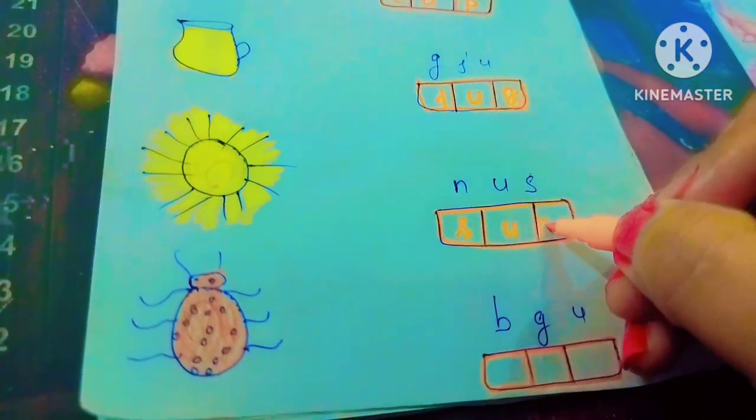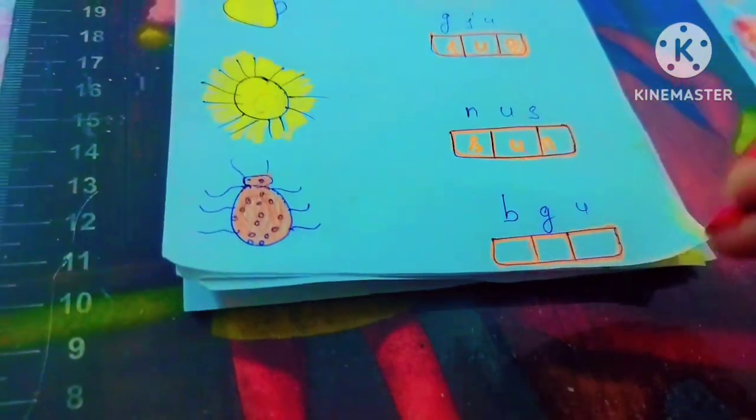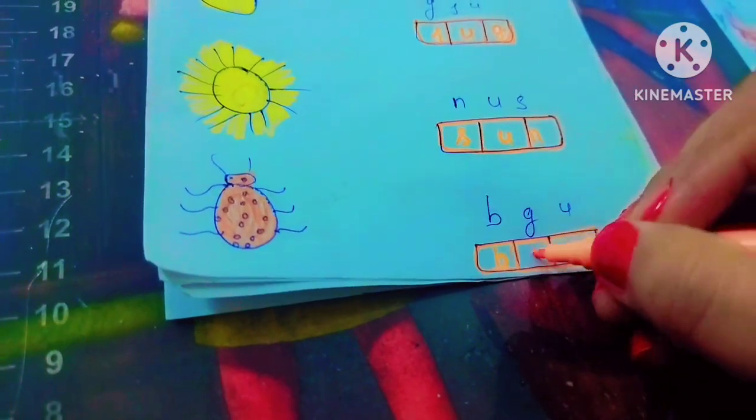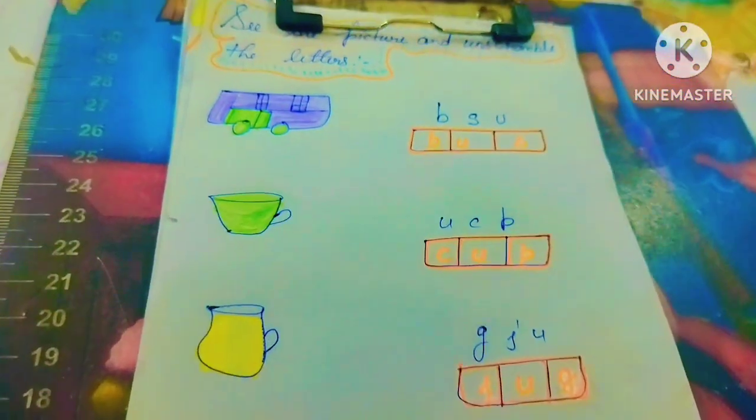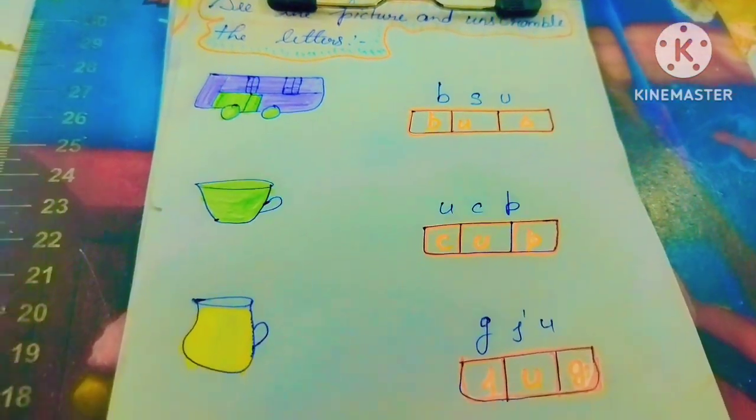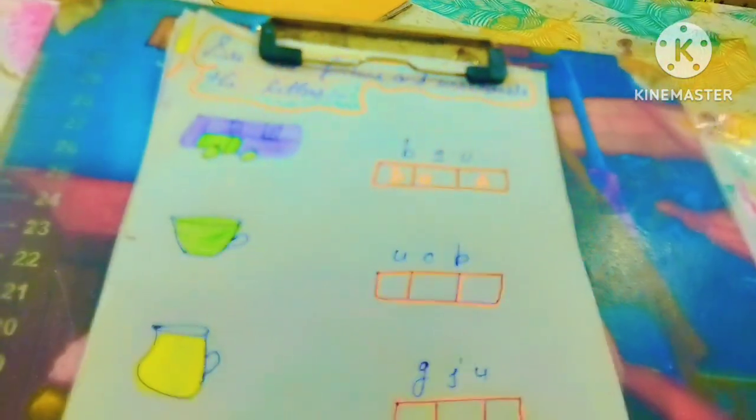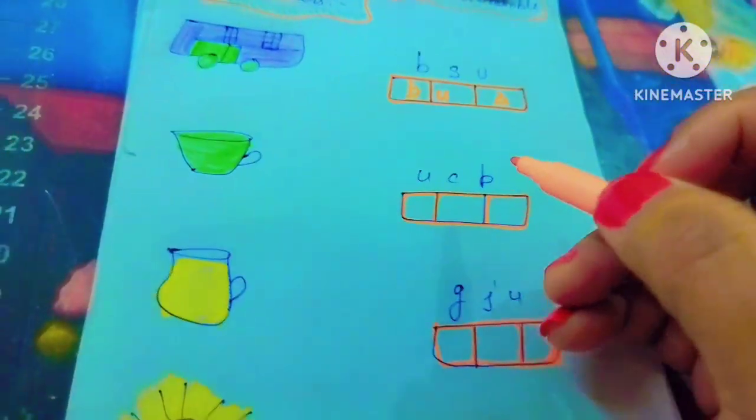S, U, N - Sun. B, U, G - Bug. So this way you can teach your child unscramble letters. This way.